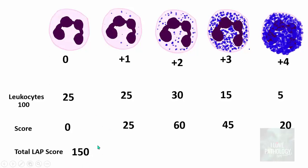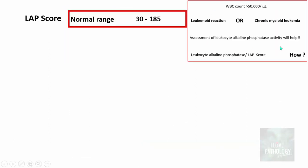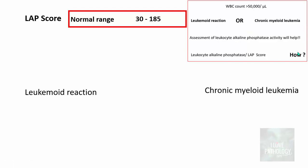The normal range of leukocyte alkaline phosphatase score is 30 to 185. Now, coming back to the question — is it leukemoid reaction or chronic myeloid leukemia? In leukemoid reaction, because all the cells are mature leukocytes, you expect a very high score, since there are lots of neutrophils with very high activity.